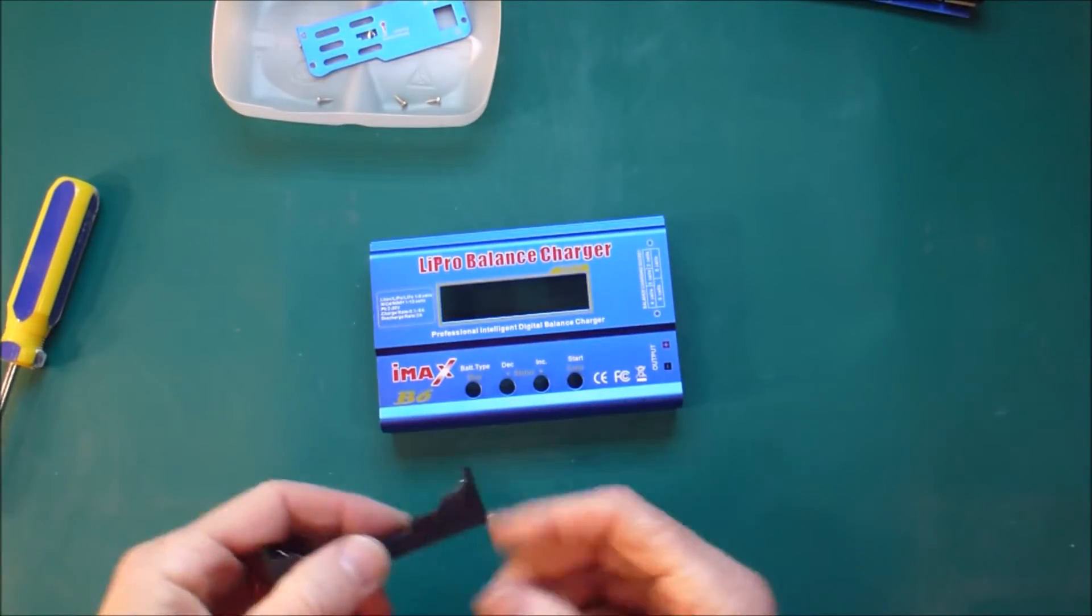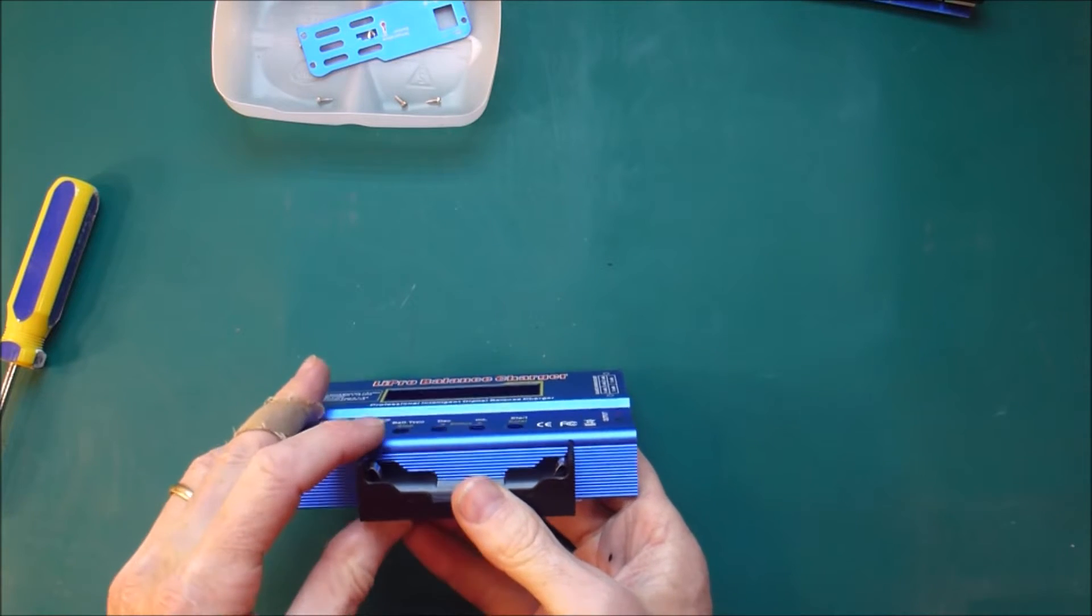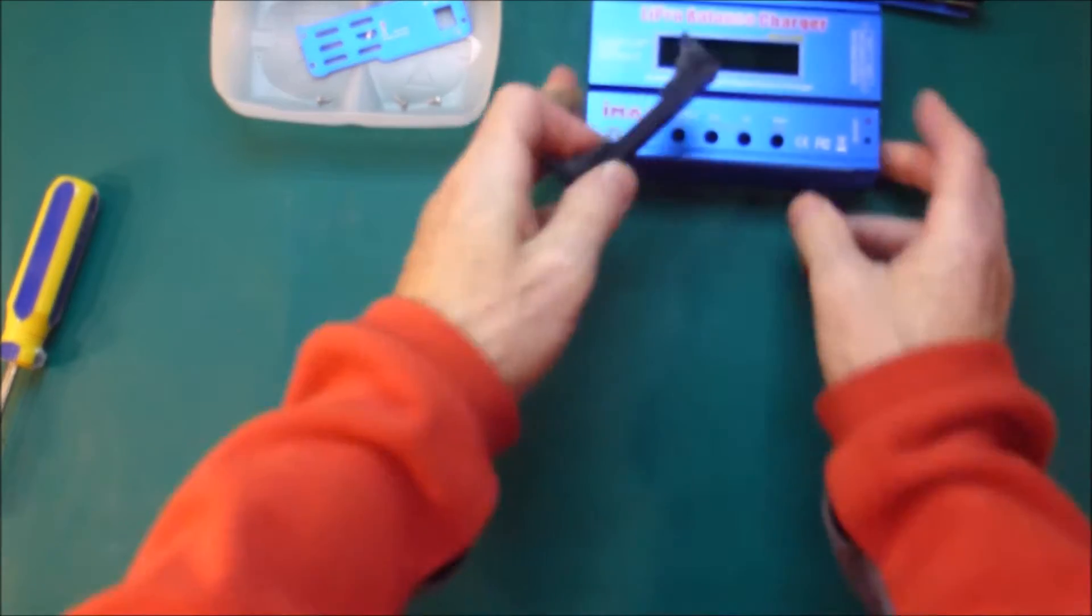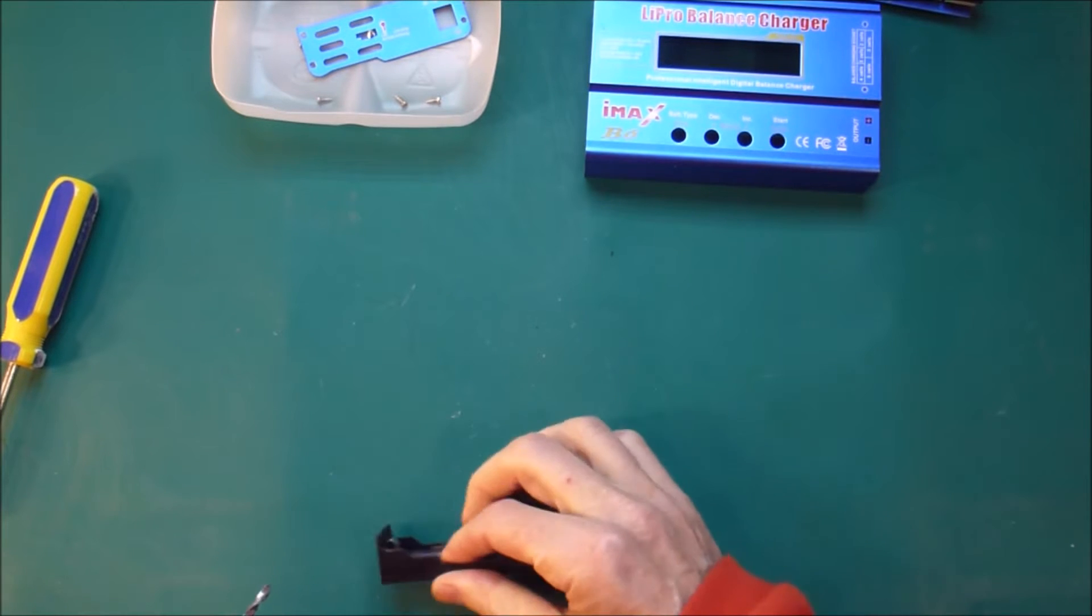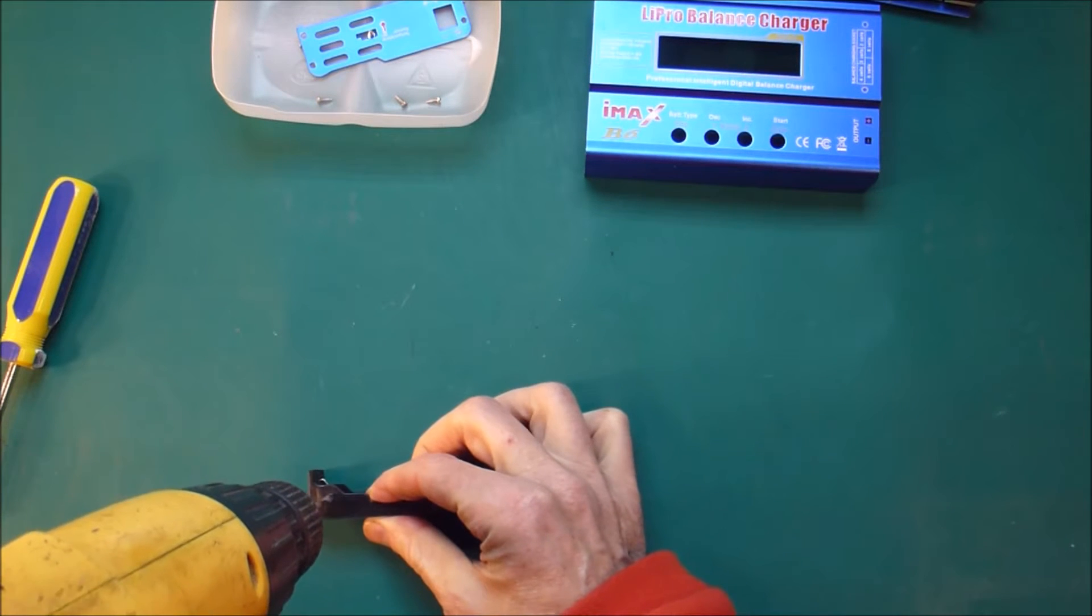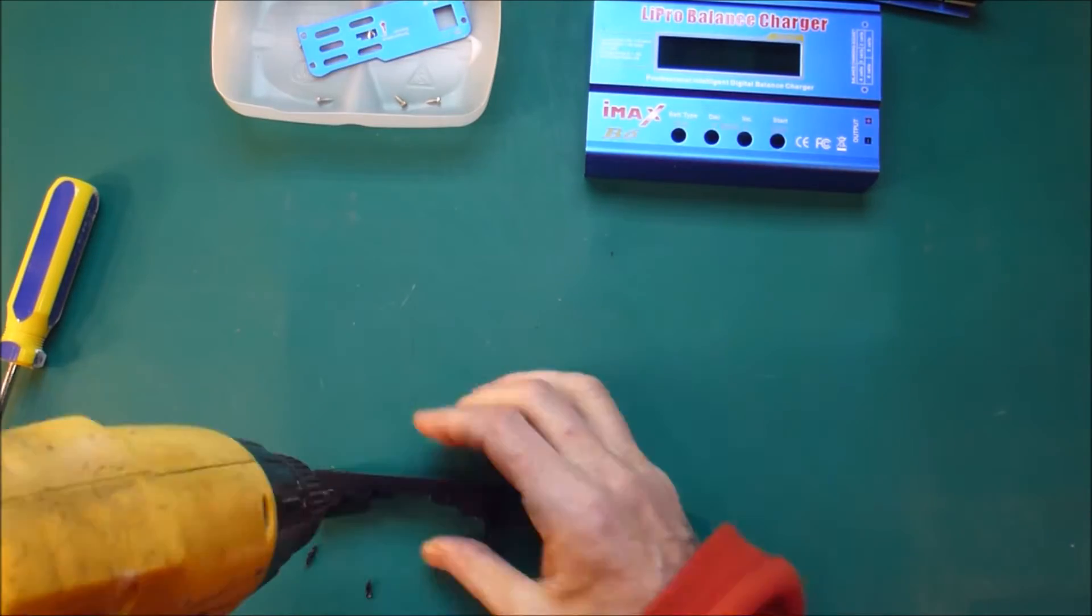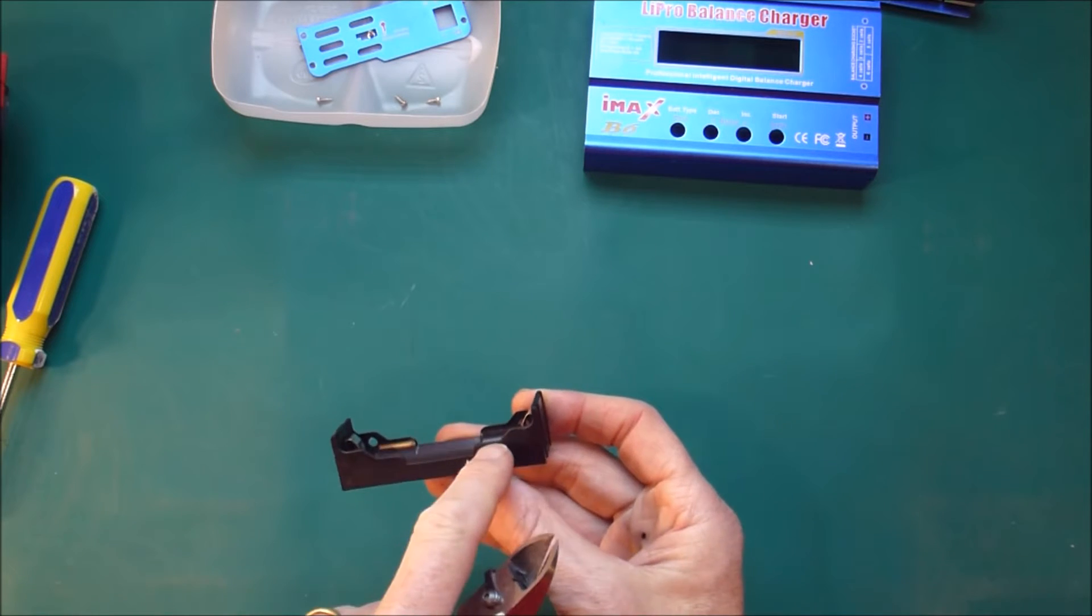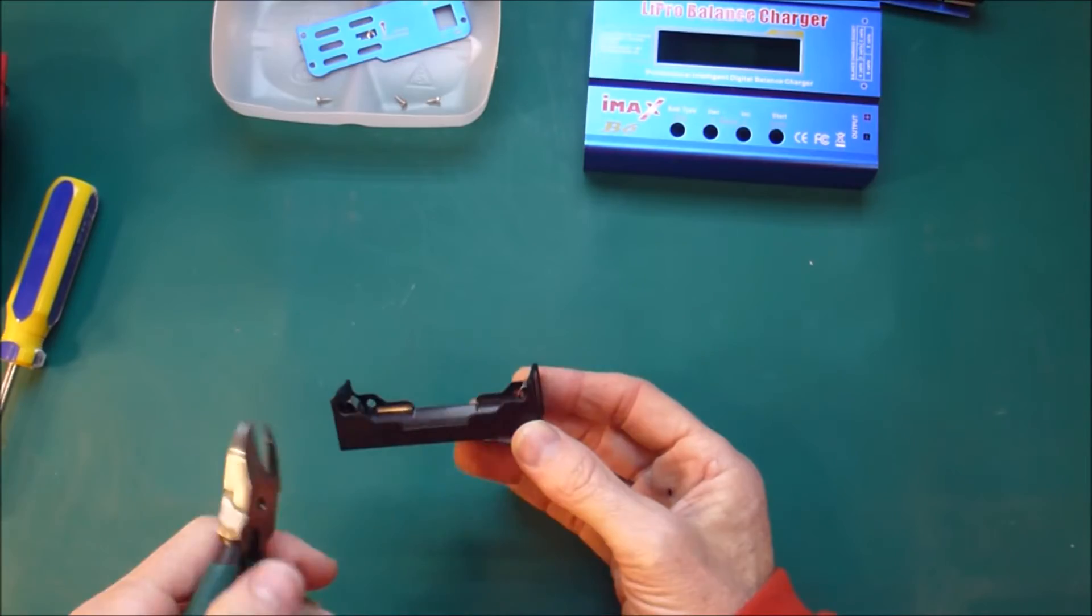Then what we're going to do is rivet that onto there, like that. So I need to drill some holes, right about there. I need to chop away some of this to give my riveter room.